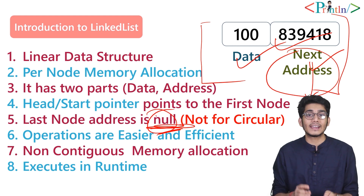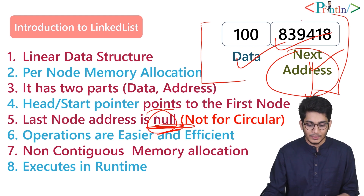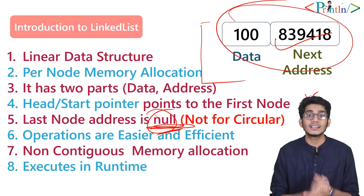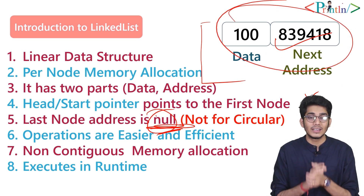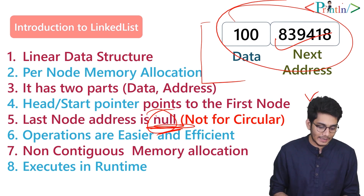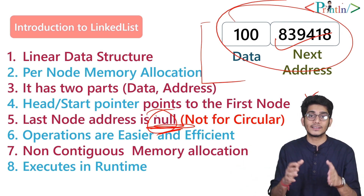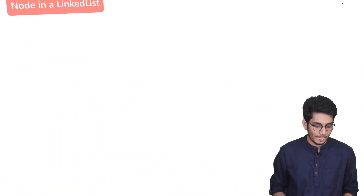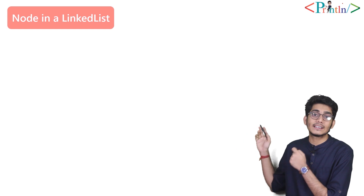Linked list executes in runtime. You allocate the nodes that you need, so memory is allocated at runtime. You don't need to define an array at compile time. Whenever you declare any nodes, they are created at runtime.